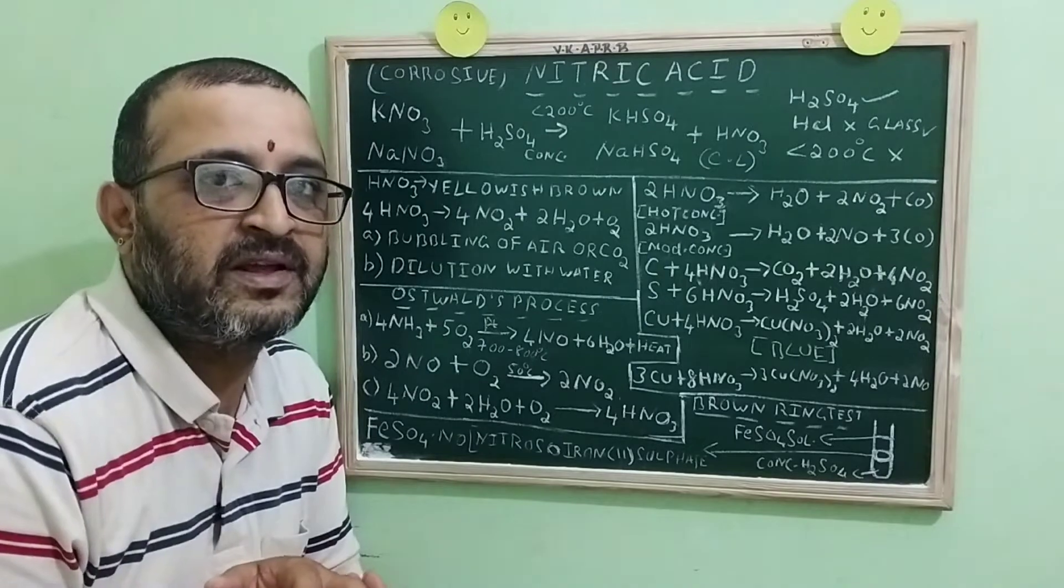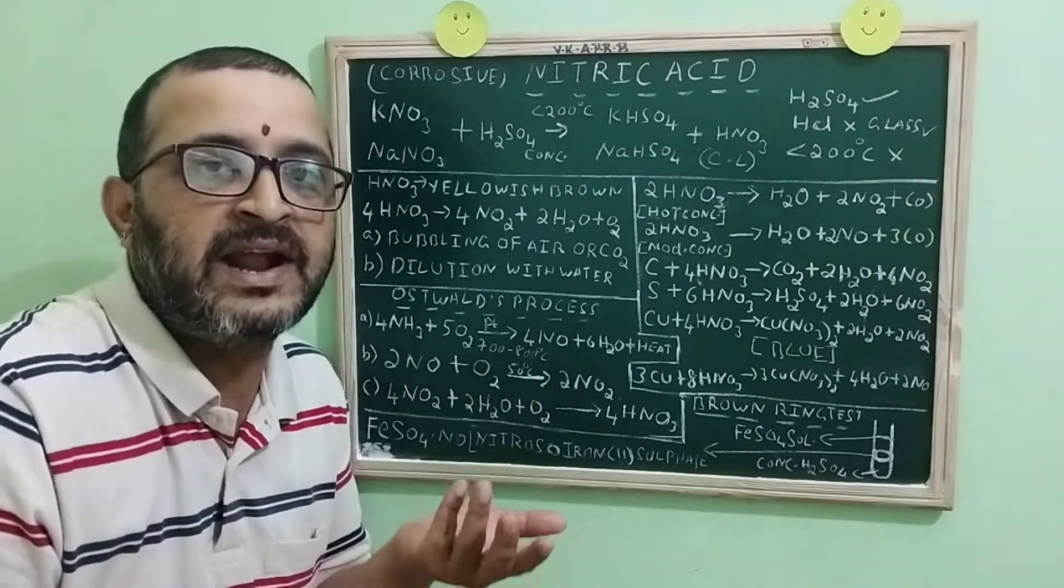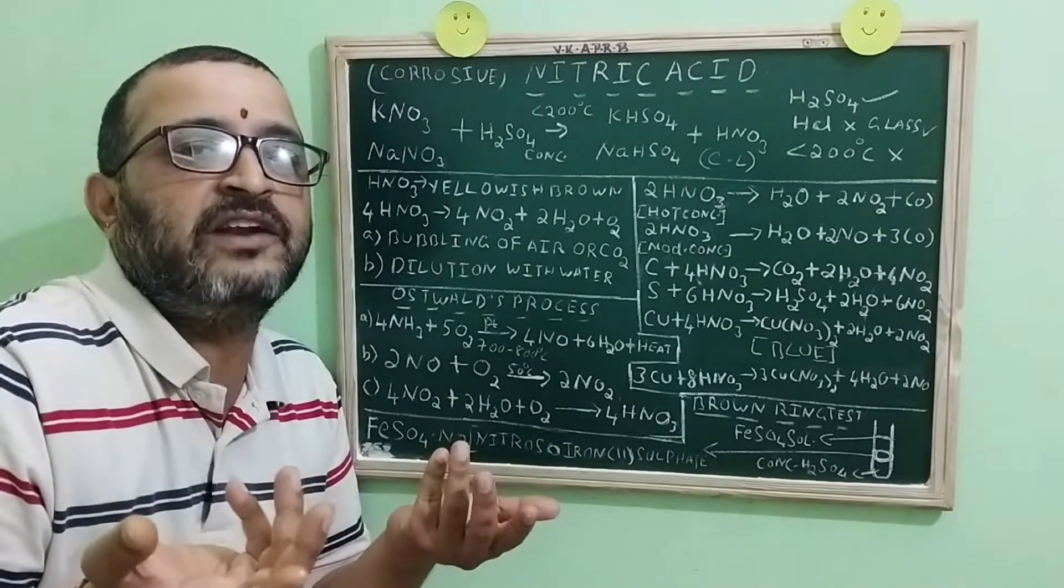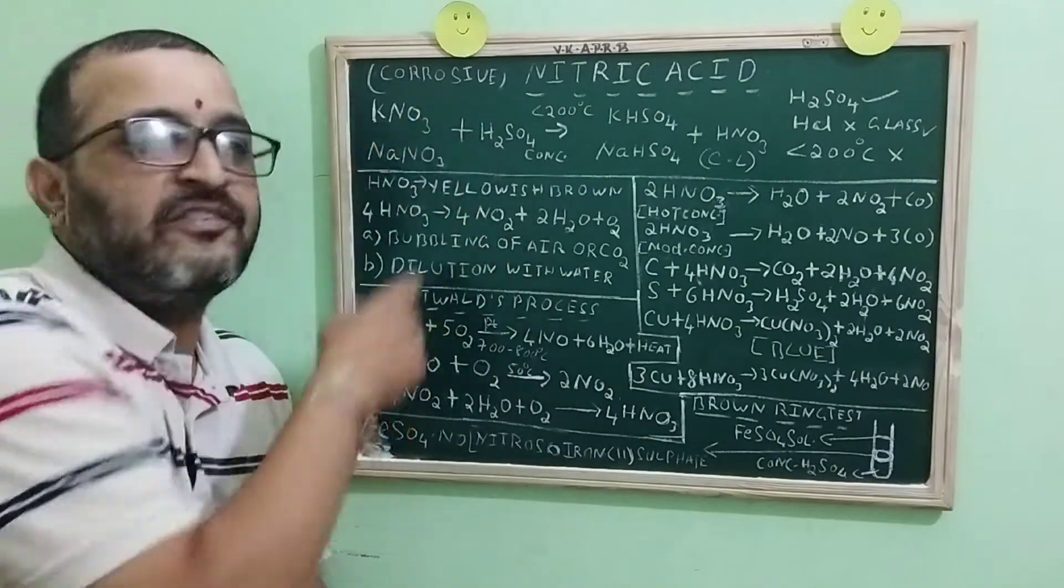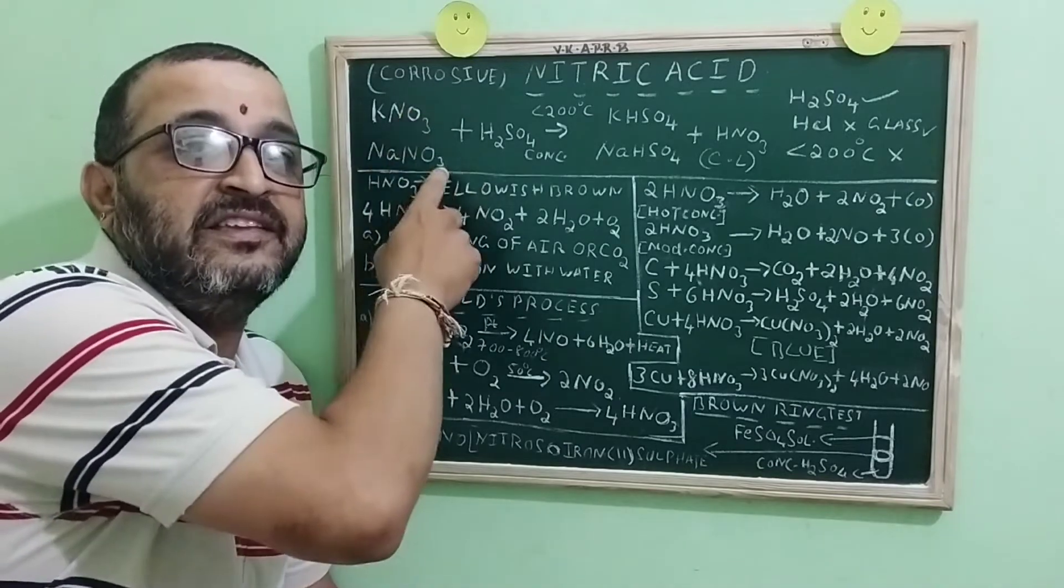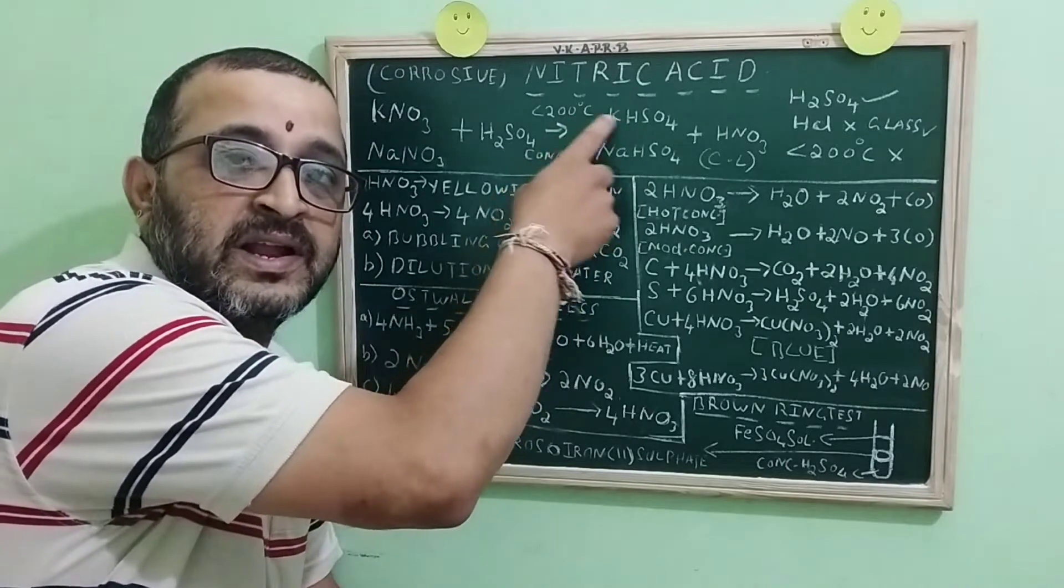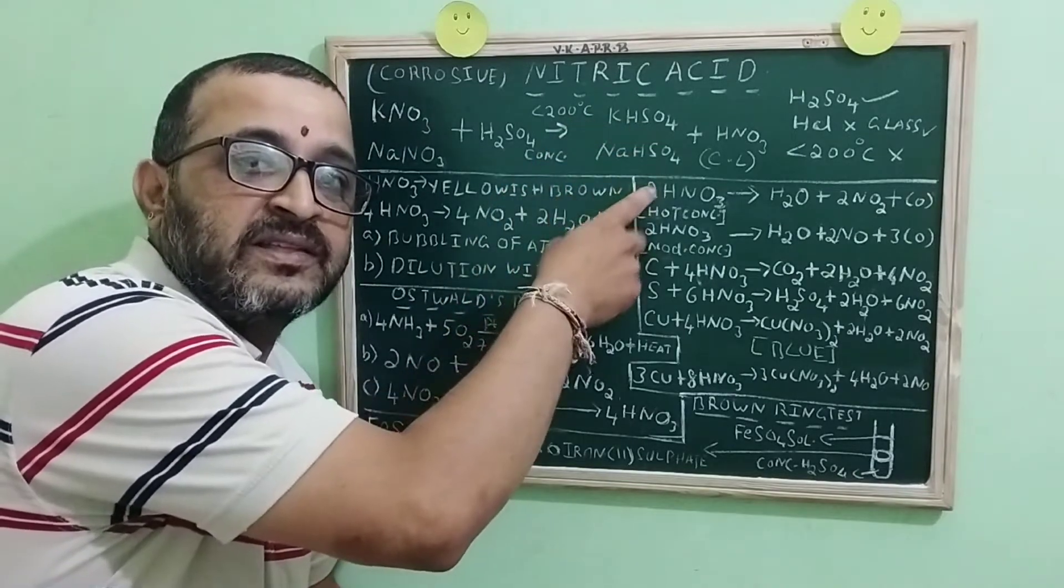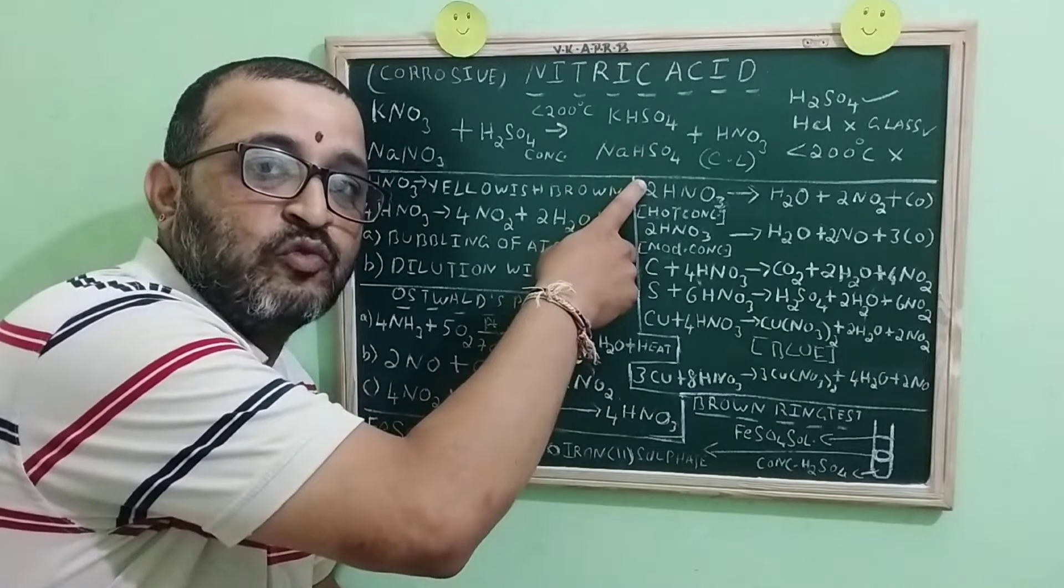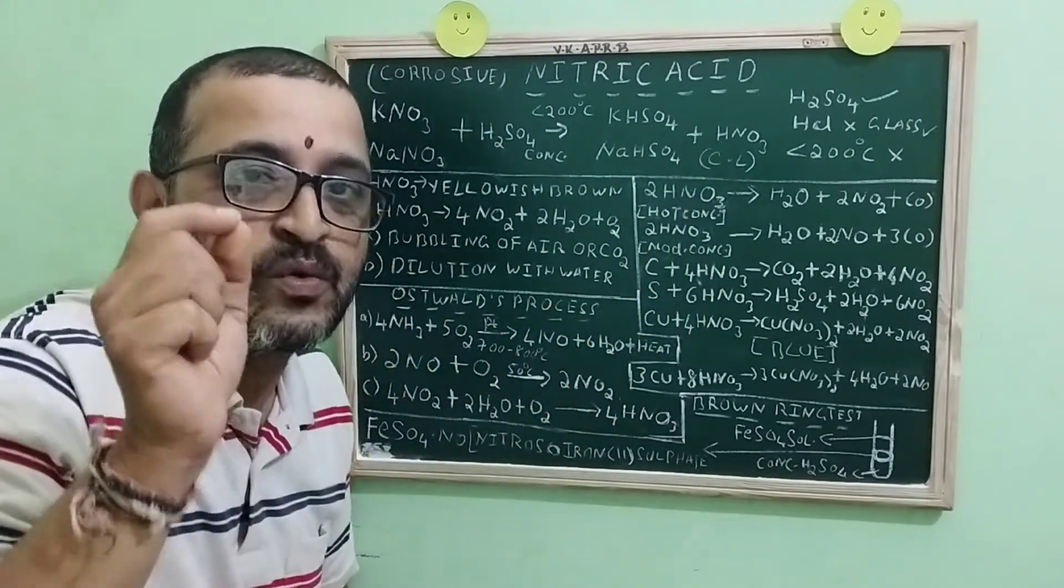Now coming to the laboratory preparation, how do you prepare nitric acid? Very simple. By making use of a nitrate salt. Which nitrate salt we take? We take potassium nitrate or sodium nitrate. When we heat these salts with concentrated sulfuric acid, temperature less than 200, you will get acid salt, that is potassium bisulfate or sodium bisulfate, with nitric acid vapors.